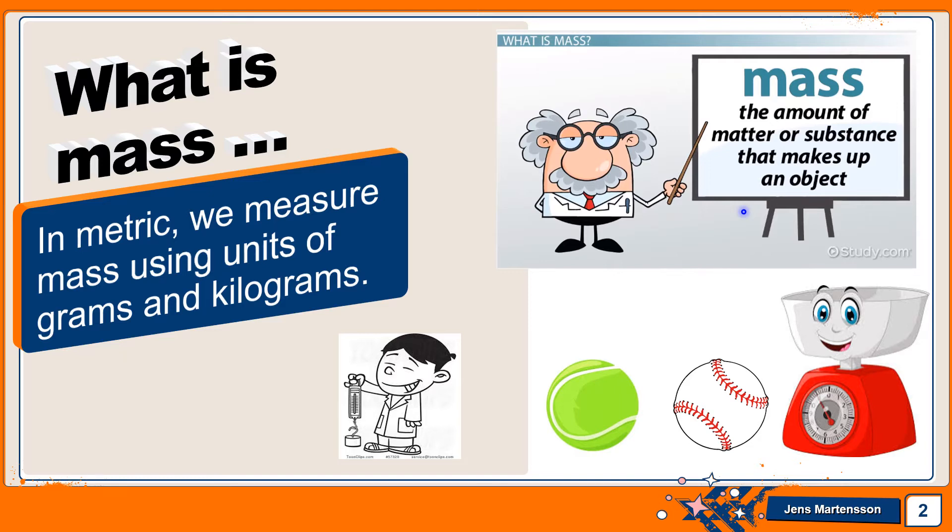So now let's take a look at a tennis ball compared to a baseball. A tennis ball is not made up of a lot of matter, or in this case, we would say it doesn't have a lot of mass because it doesn't have much matter to weigh. In the case of a baseball, a baseball is made up of more matter.